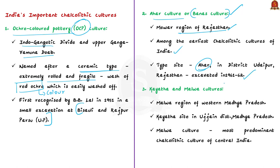Next come the Kayatha and Malwa cultures, present in the Malwa region of western Madhya Pradesh. The Kayatha culture is named after its type site Kayatha, situated in the Ujjain district of Madhya Pradesh. The Malwa culture is the most predominant Chalcolithic culture of central India, with a wide distribution of sites almost all over the Malwa region.